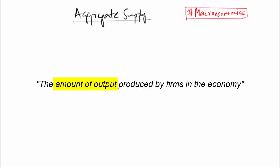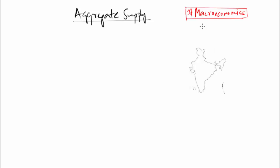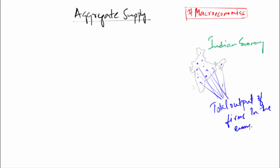We are talking about total amount of output in an economy. Let's say for example we are taking India as a country. Therefore we are also talking about the Indian economy. Now aggregate supply of Indian economy means the total amount of output produced by firms. So all the firms that are there in this country, that is in India, we are going to calculate the total amount of output.